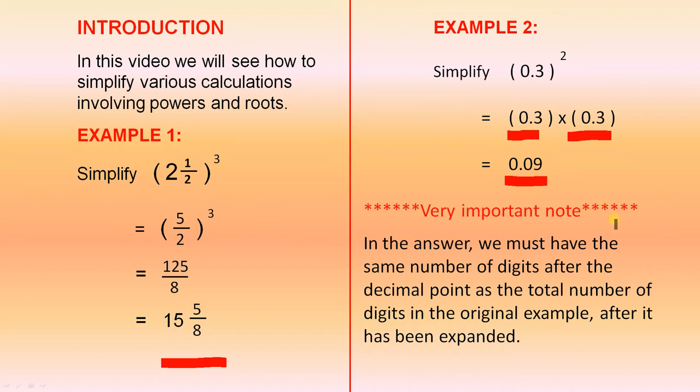Well here is the very, very important note. In the answer, we must have the same number of digits after the decimal point as the total number of digits in the original example after it has been expanded. In other words, here is the original example. Here we have one digit after the decimal point and here we have one digit after the decimal point. Altogether there are two digits after the decimal point. So in the answer, you have two digits after the decimal point. And that's how you determine where the decimal point goes and how many digits after the decimal point.